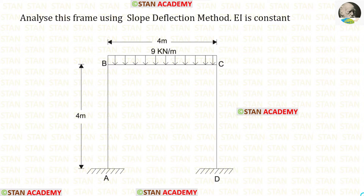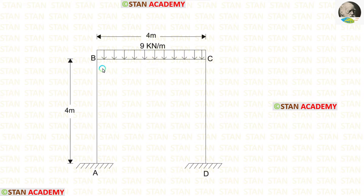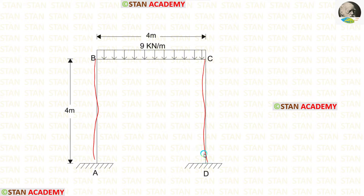Hello everyone. Today we are going to analyze this frame using the slope deflection method. Before analyzing, let us see the frame. In this frame, there are two columns: column AB and column CD. Also there is a beam BC.